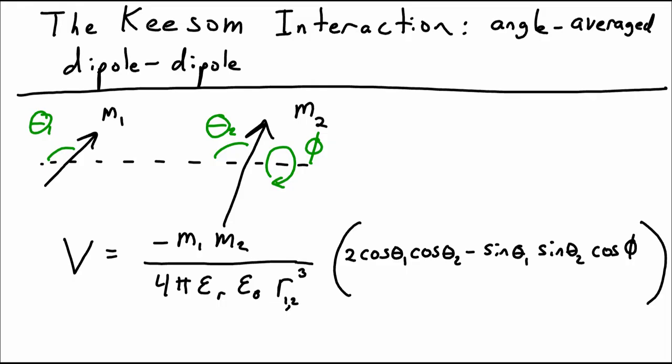We can see the potential energy of interaction between these two molecules is a function of the distance between them, R12, but it's also a function of the magnitude of each of their dipole moments, the dielectric constant of the medium that separates them, and also all these angles: theta1, theta2, and phi.